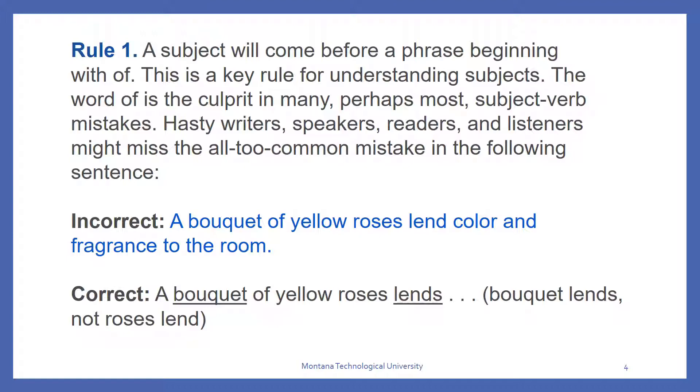So a subject comes before a phrase beginning with of, and we know of is a preposition. It's a prepositional phrase. Make sure that your verb refers back to the actual subject, not the contents of the prepositional phrase. So, in this case, our incorrect sentence is a bouquet of yellow roses lend color and fragrance to the room. The mistake is, lend is matching roses when it should match back to bouquet. Bouquet is the subject, so we need our singular verb, lends.